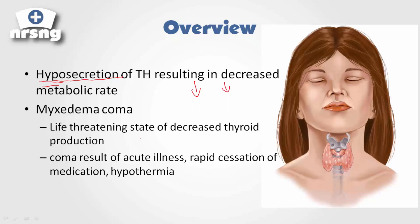This can lead to what's called myxedema coma, where because we have a life-threatening state of decreased thyroid production and thyroid hormone in the body, this can actually lead to a coma. It can be a result of acute illness, rapid cessation of medication, or hypothermia.